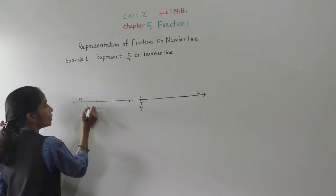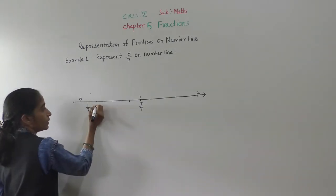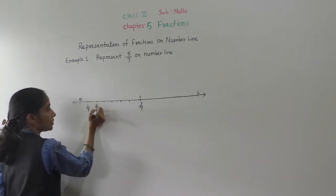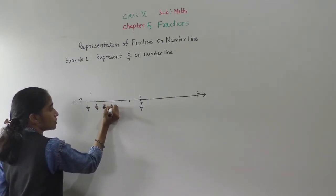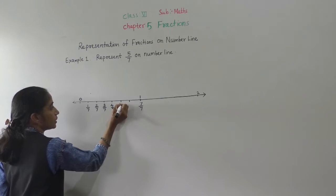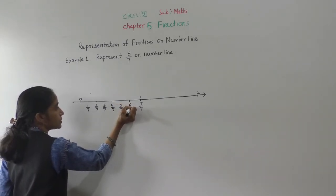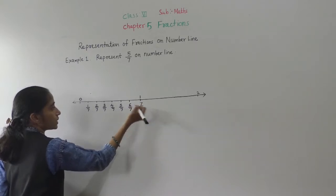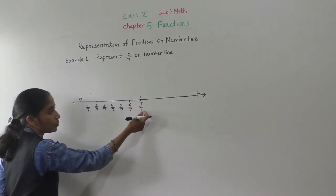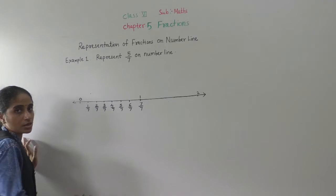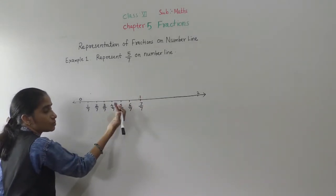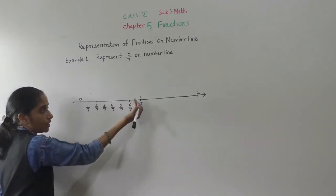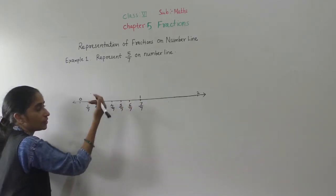So this part is 1 upon 7, this part is 2 upon 7, this part is 3 upon 7, this part is 4 upon 7, this part is 5 upon 7, this part is 6 upon 7, and this part is 7 upon 7. So 7 upon 7 means 1. Therefore, 5 upon 7 is smaller than 1.